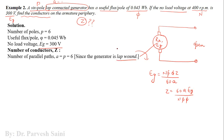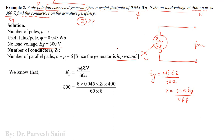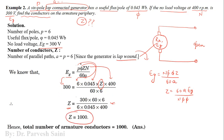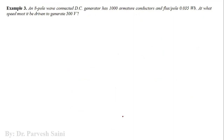Number of parallel paths A = P = 6 because it is a lap-wound generator. By putting all parameters and rearranging the equation to obtain Z, the answer is 1000. To generate 300 volts for a six-pole lap-wound machine with flux per pole of 0.045 weber rotating at 400 rpm, 1000 conductors are required.